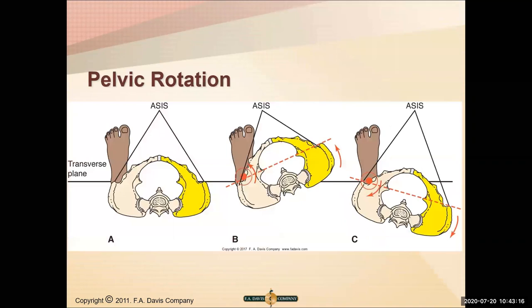Rotation is going to happen in the transverse plane and is described by whether the ASIS is forward or back. If the right ASIS is forward, it's right pelvic rotation. If the right ASIS is back, it's right posterior rotation. It all depends on which side is actually rotating and moving.